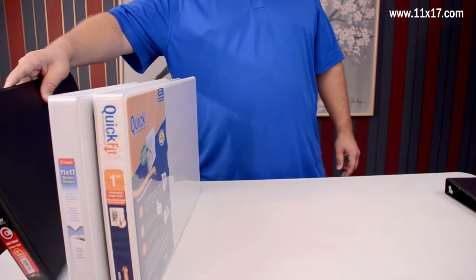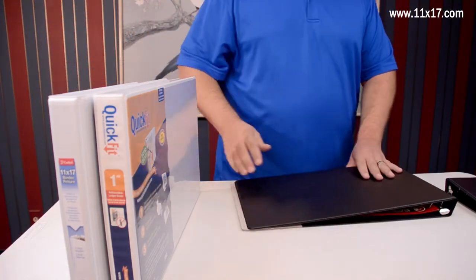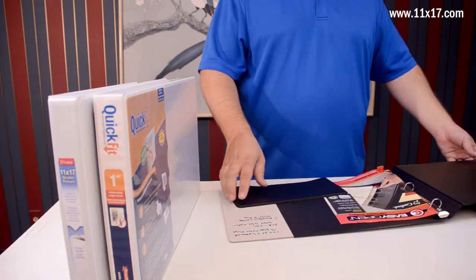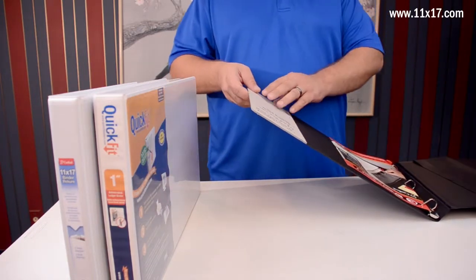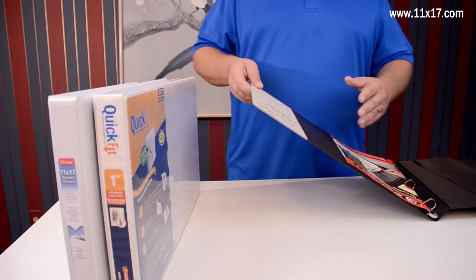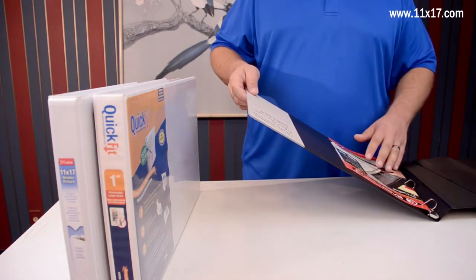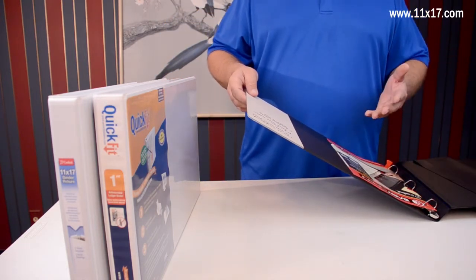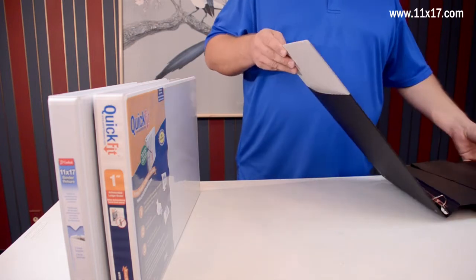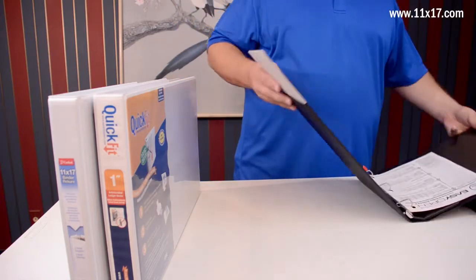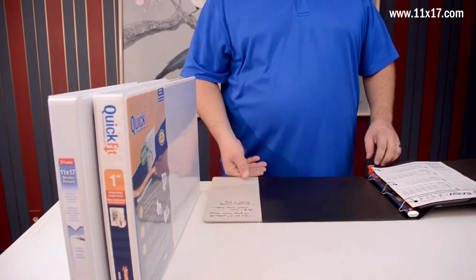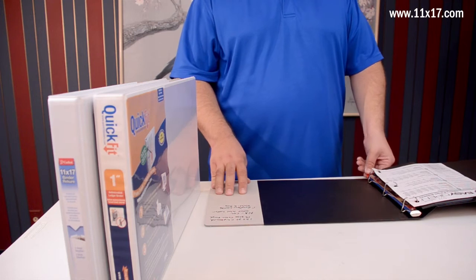Next on the list is the Cardinal. They're a black binder. It has a 125-point chipboard, just a little bit thicker than the Ruby Paulina, but not by much. 13-gauge color vinyl. It really doesn't have a clear overlay. There's a small label holder there on the spine. And it features a 1-inch easy open locking slant D-ring.